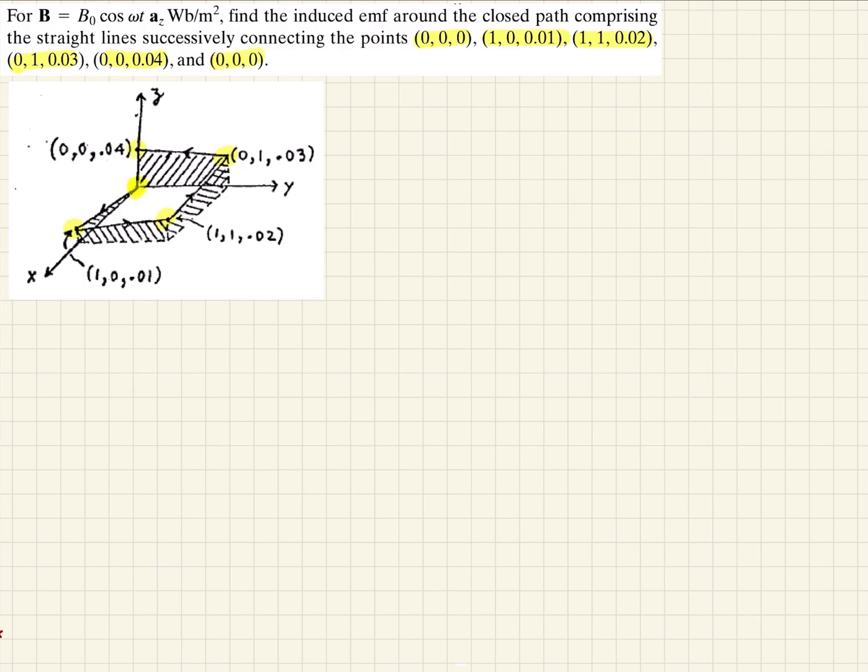This closed line path goes like that, and if we bound it by the XY plane, you can see they've hatched in all of this area here. This is what we're dealing with.